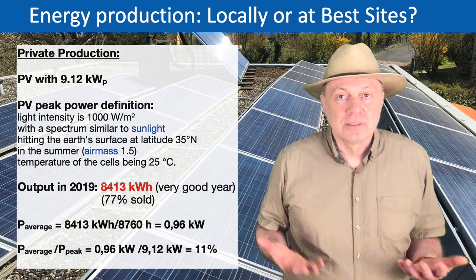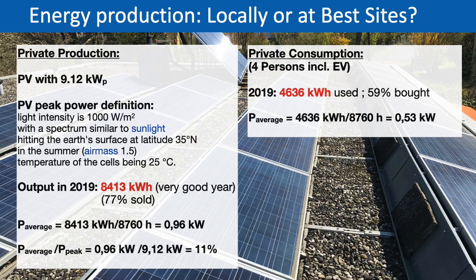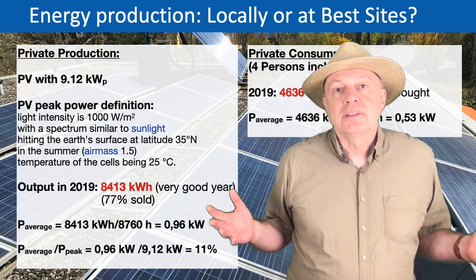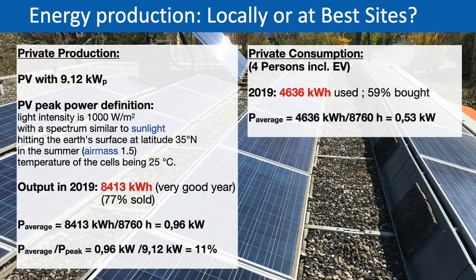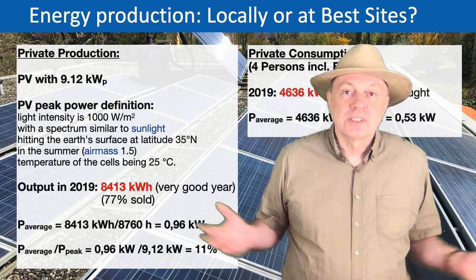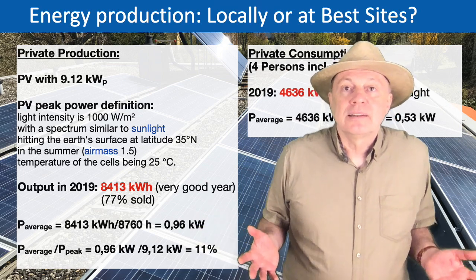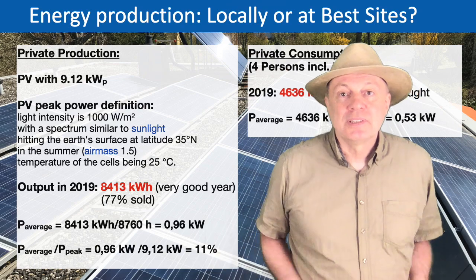How does this compare to our consumption at home? At home we are four people including my children, and I also have an electric car. In 2019 I used 4,636 kilowatt hours of electricity. So I used only half as much as I produced, which sounds great. On the other hand, about 60% of what I used I had to buy from the grid, because I used it at a time when there was not enough sun — in the winter or at night.